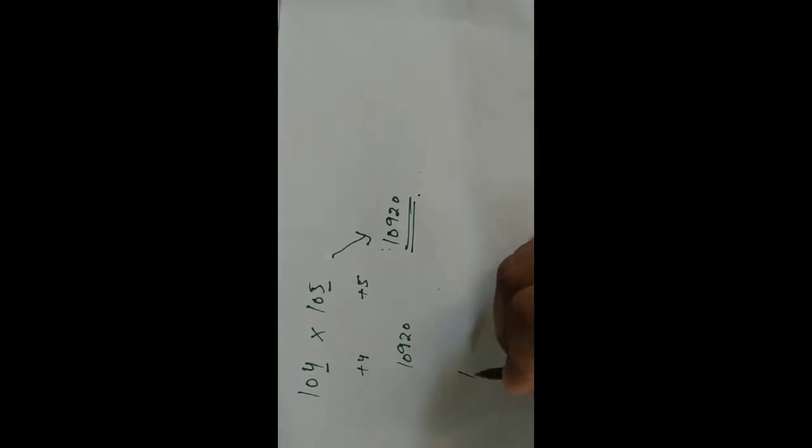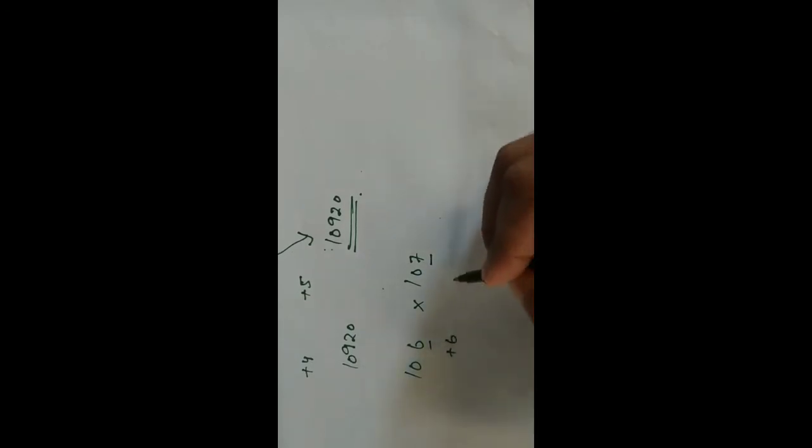One more trick for hundreds. Let you have 106 into 107. You have to add plus 6 here or plus 7 here. You can add plus 7 here or plus 6 here, that's your own choice, but this will be the easier. Plus 6 and plus 7. Add both of them.